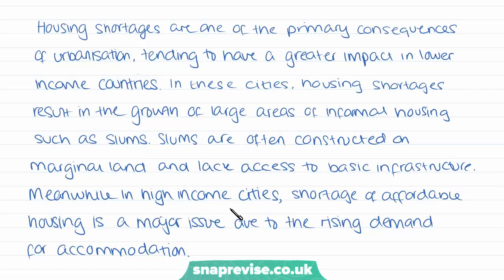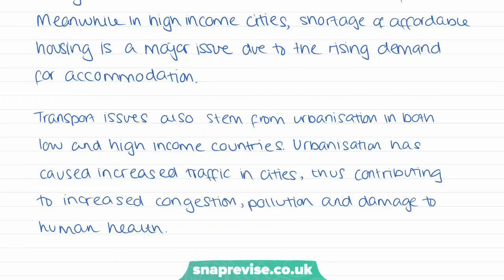Finally, I'll conclude by talking about transport issues: transport issues also stem from urbanisation in both low and high income countries. Urbanisation has caused increased traffic in cities, thus contributing to increased congestion, pollution and damage to human health.